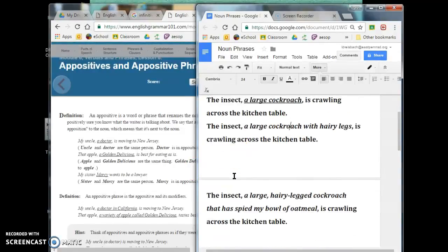Our next sentence goes even further, and it gets a little more ridiculous. The insect, a large cockroach with hairy legs is crawling across the kitchen table. So, here, we have an even bigger appositive. Now, we not only know that it's a cockroach, we know it's a large cockroach, and we know it has hairy legs. So, here, this appositive phrase has not only an adjective before the noun that is the basic part of the appositive, but it also has a follow-up of with hairy legs, which is a prepositional phrase that's acting like an adjective because it's telling more about the cockroach. But this whole thing is describing the insect.